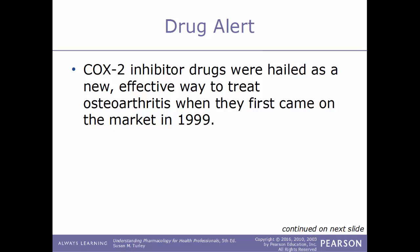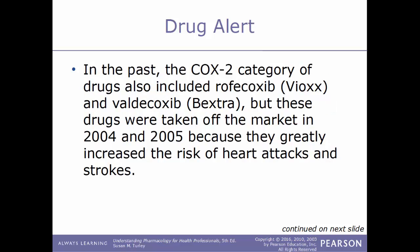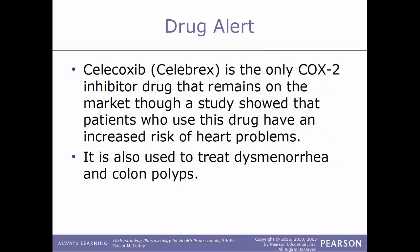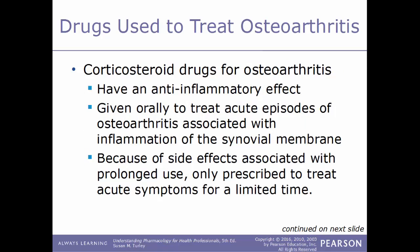A good example of a COX-2 inhibitor is celecoxib, known by its trade name Celebrex. Drug alert: COX-2 inhibitors were hailed as a new effective treatment for osteoarthritis when they came to market in 1999. The category previously included Vioxx and Bextra, but these were taken off the market in 2004 and 2005 due to greatly increased risk of heart attacks and strokes. Celebrex is the only remaining COX-2 inhibitor; it also carries increased cardiovascular risk and has additional uses including treating colon polyps and dysmenorrhea.